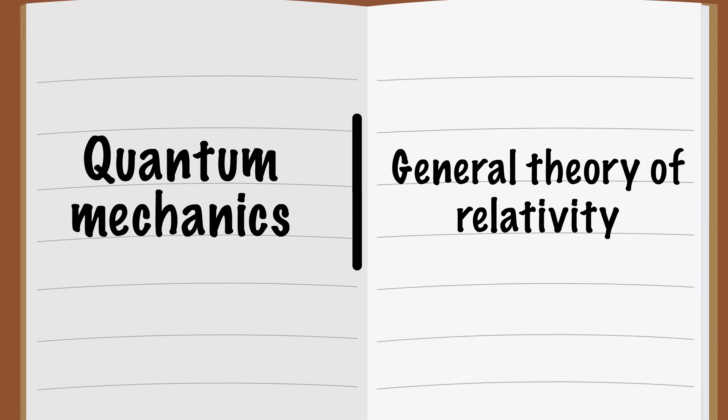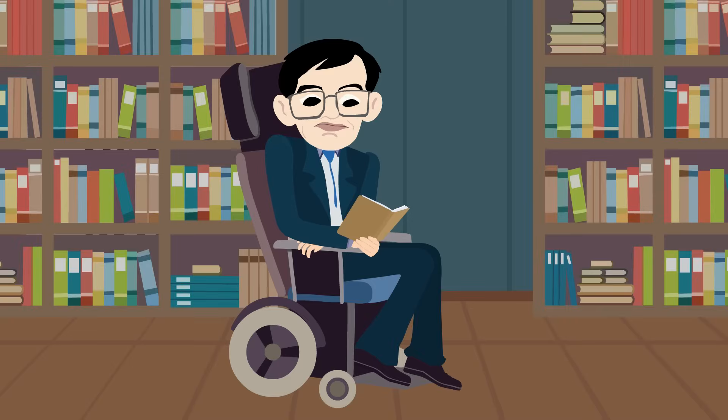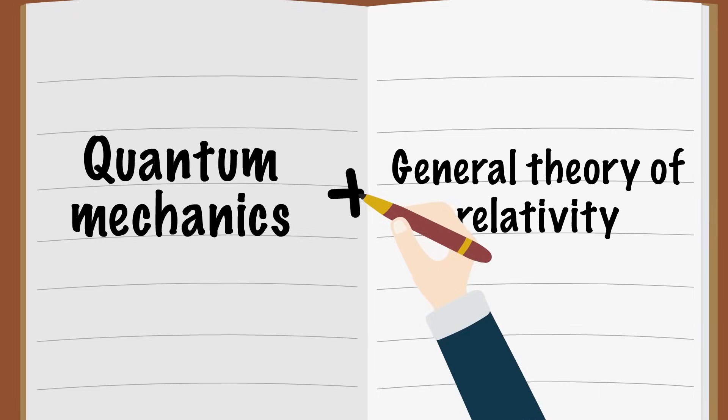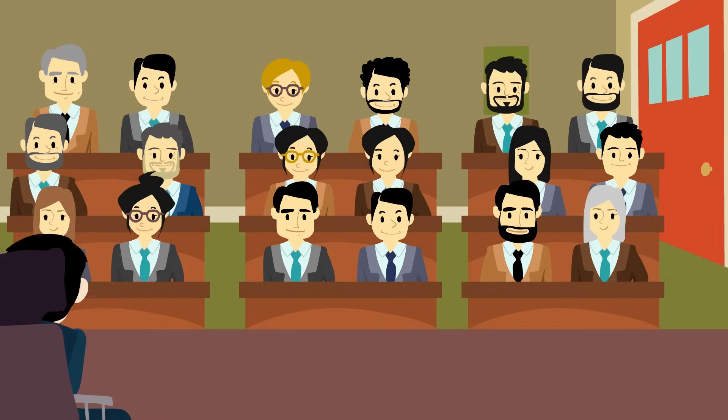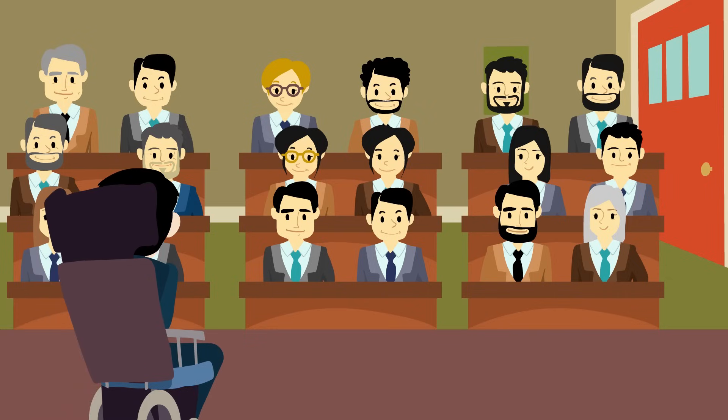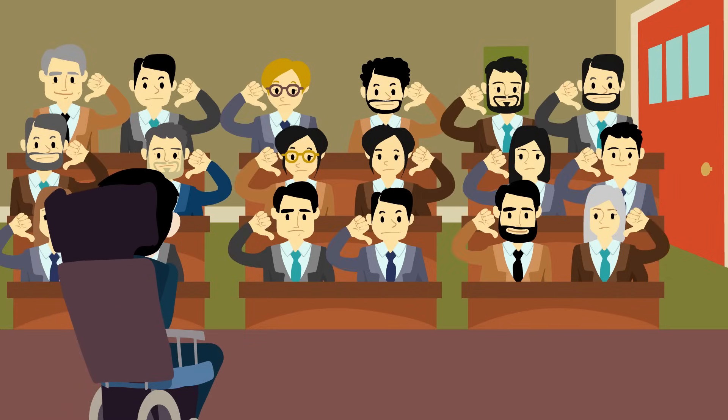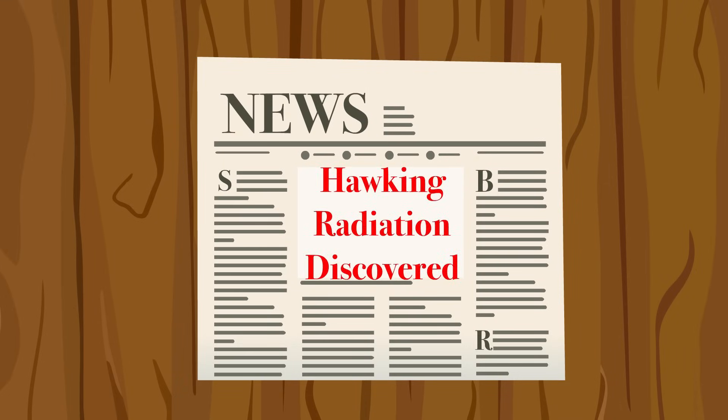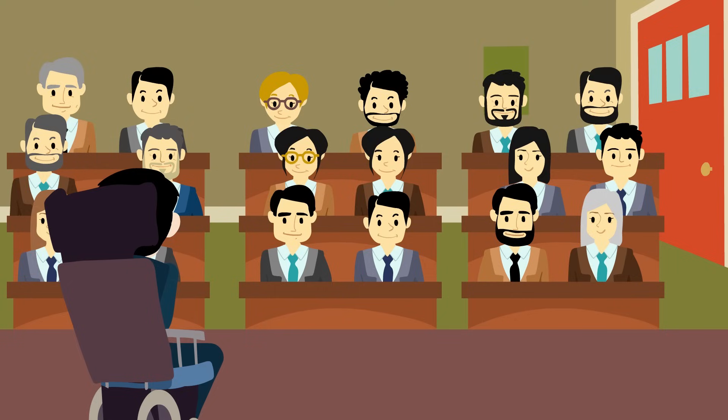He formulated this theory by combining insights from quantum mechanics, the science of how the very smallest particles of the universe work, as well as Einstein's general theory of relativity, which deals with how gravity works at astronomically large scales. Not surprisingly, Hawking's theory was not initially well received in scientific circles. Even so, it gradually gained acceptance and popularity, and became known as a groundbreaking discovery in the field of black holes.